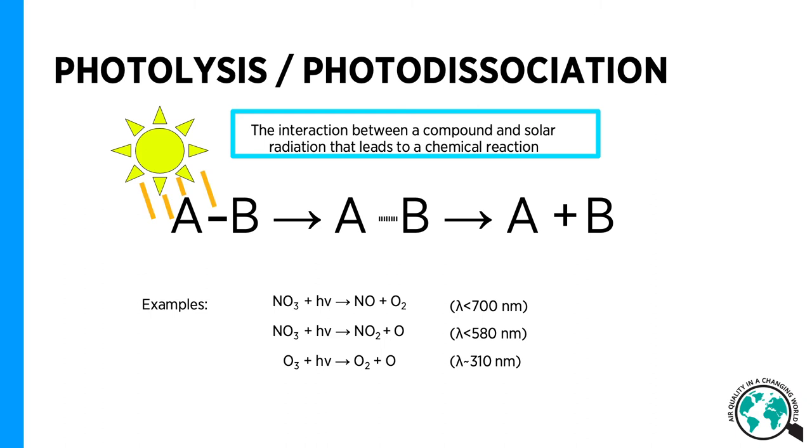A few examples of photolysis are shown on the slide. The nitrate radical photo-dissociates into different products depending on the energy of the light absorbed.